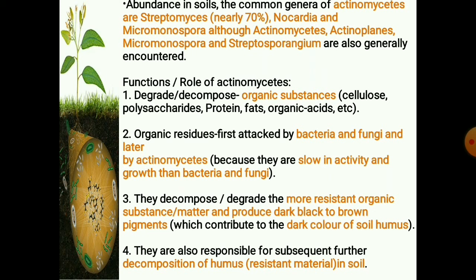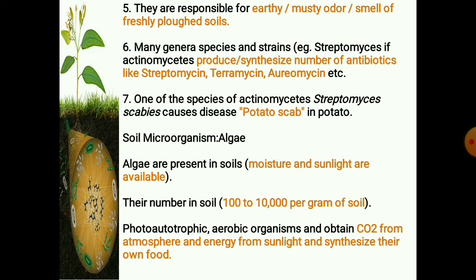Actinomycetes are slower in activity and growth than bacteria and fungi. They decompose or degrade more resistant organic substances and produce a number of dark black to brown pigments which contribute to the dark color of soil humus. They are responsible for subsequent further decomposition of humus in the soil and for the earthy or musty odor of freshly ploughed soil. Many genera, species, and strains produce and synthesize antibiotics like streptomycin and terramycin. One species, Streptomyces scabies, causes potato scab disease.